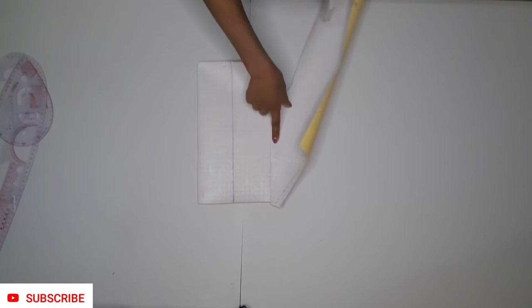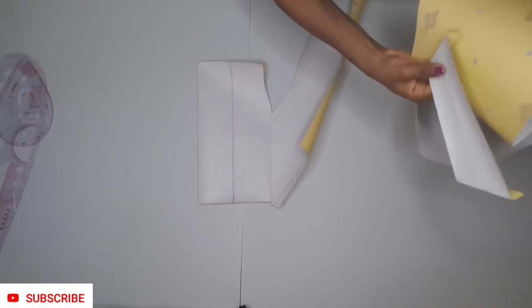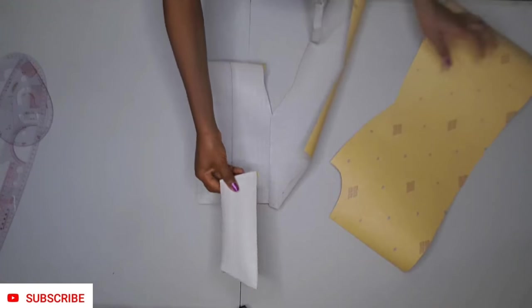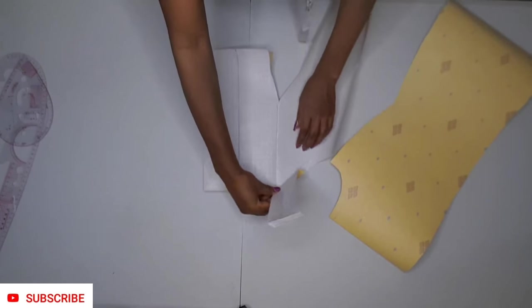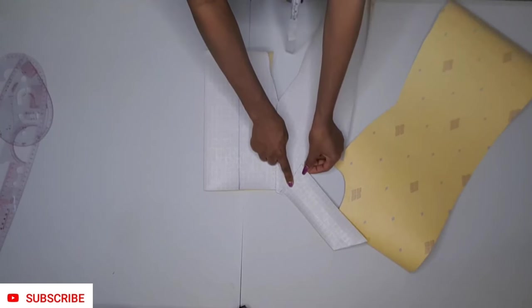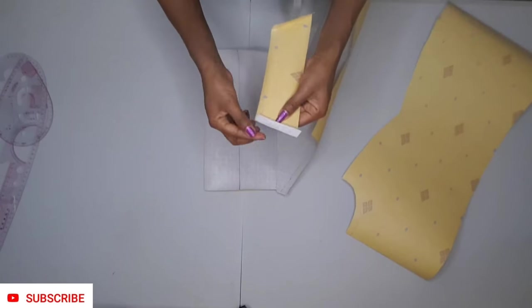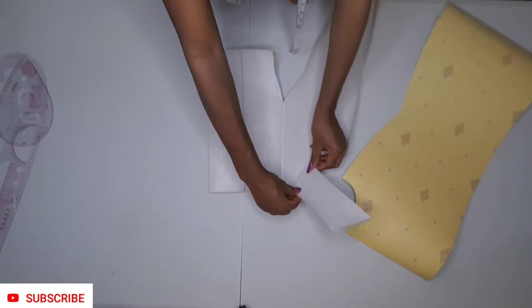This is what mine looks like after joining it together. Now I'm going to join the sleeve also to the armhole of the side, as you can see. I'm going to attach the other side of the sleeve to the back side.